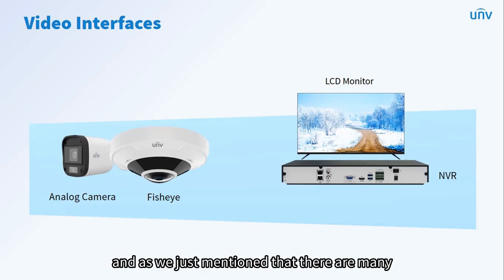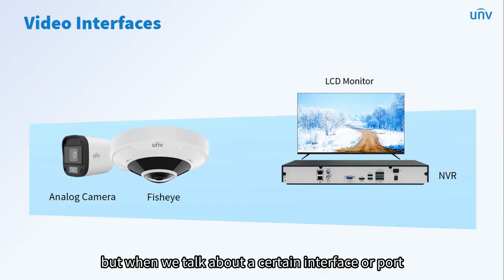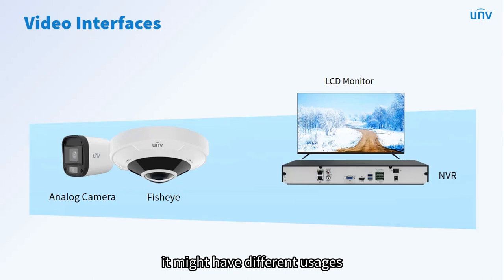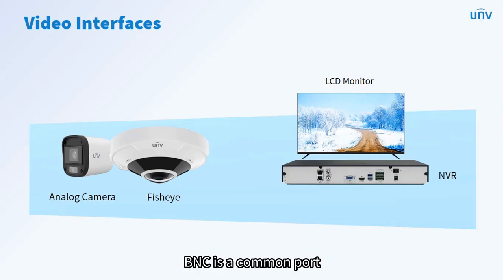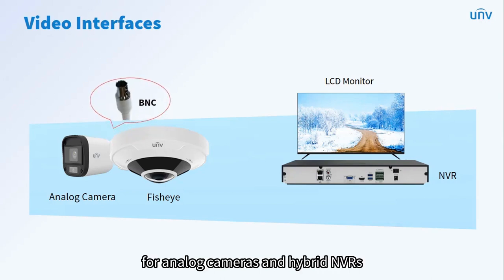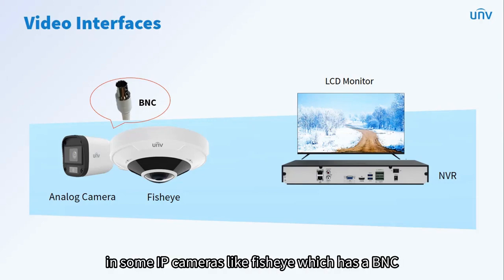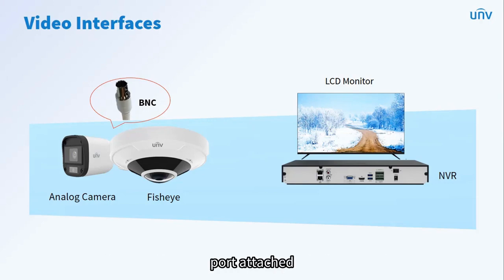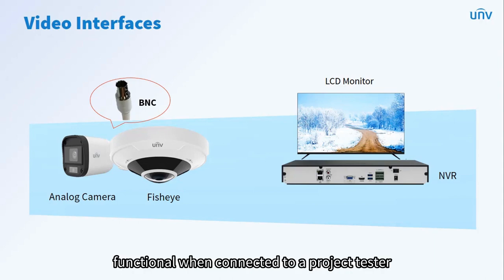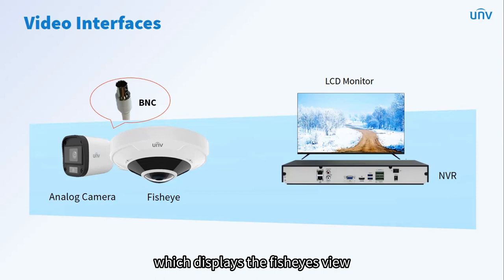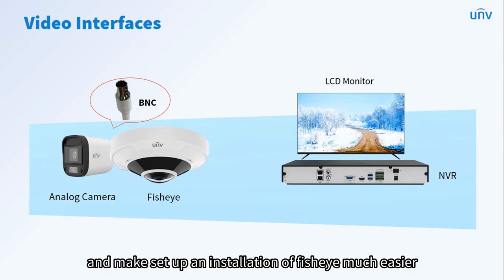As mentioned, there are many different interfaces in a complete CCTV system. When we talk about a certain interface or port, it might have different usages. For example, in CCTV systems, BNC is a common port for analog cameras and hybrid NVRs. But in some IP cameras like Fisheye which has a BNC port attached, the BNC port is very functional when connected to a project tester, which displays the Fisheye's view and makes setup and installation much easier.